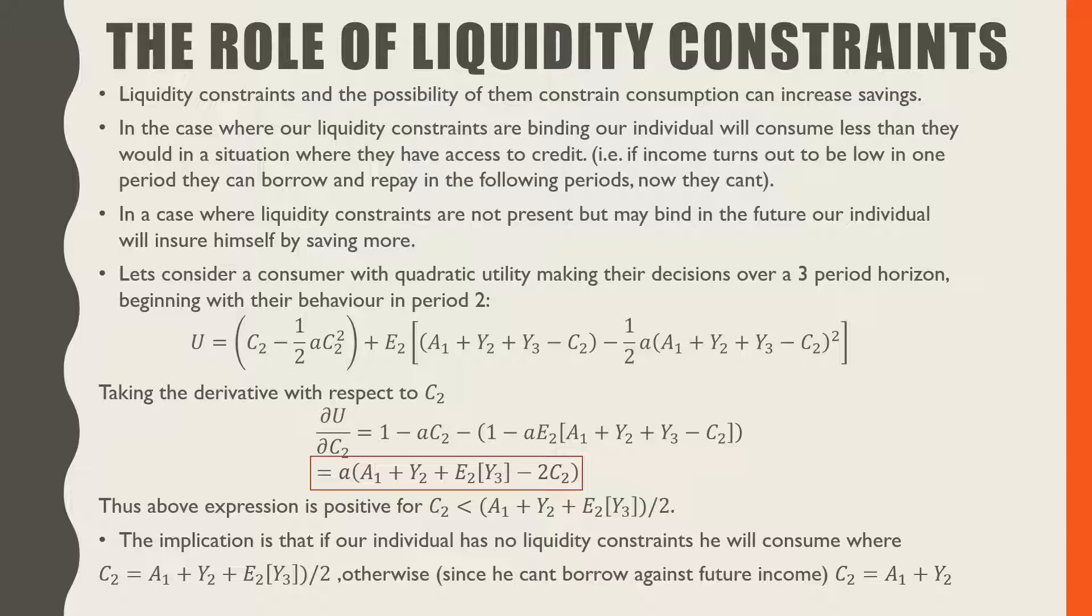The implication of this is that if our individual has no liquidity constraints, he will consume where the consumption in period two is equal to the endowment from period one plus the labor income in period two plus the expected labor income in period three all over two.